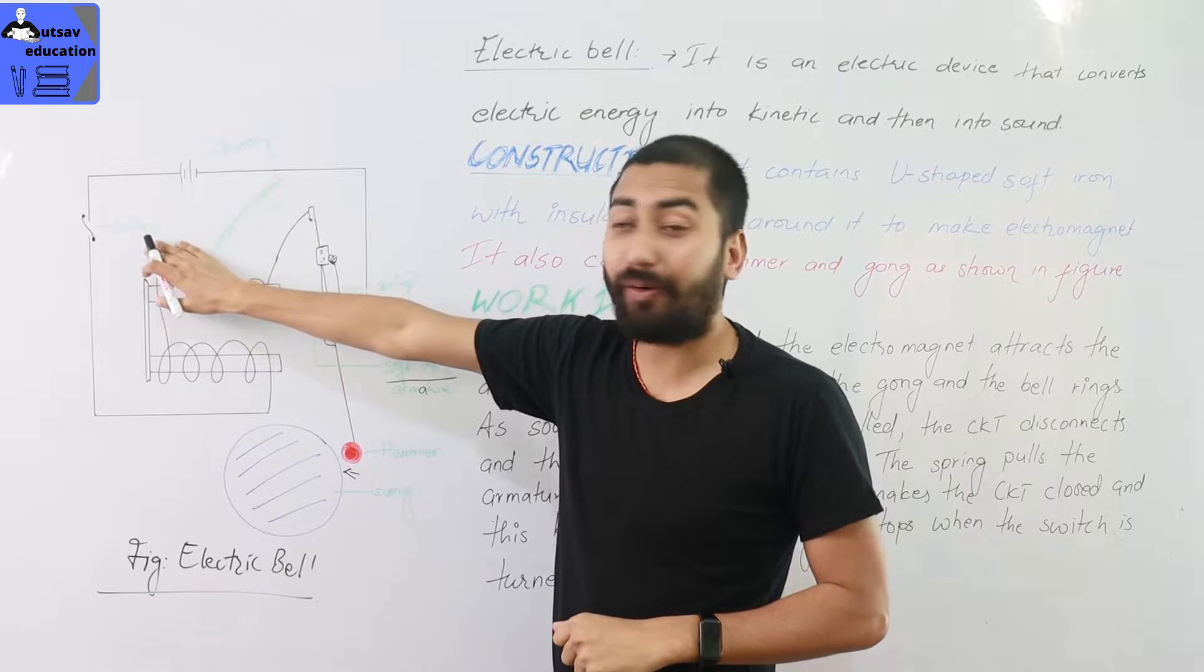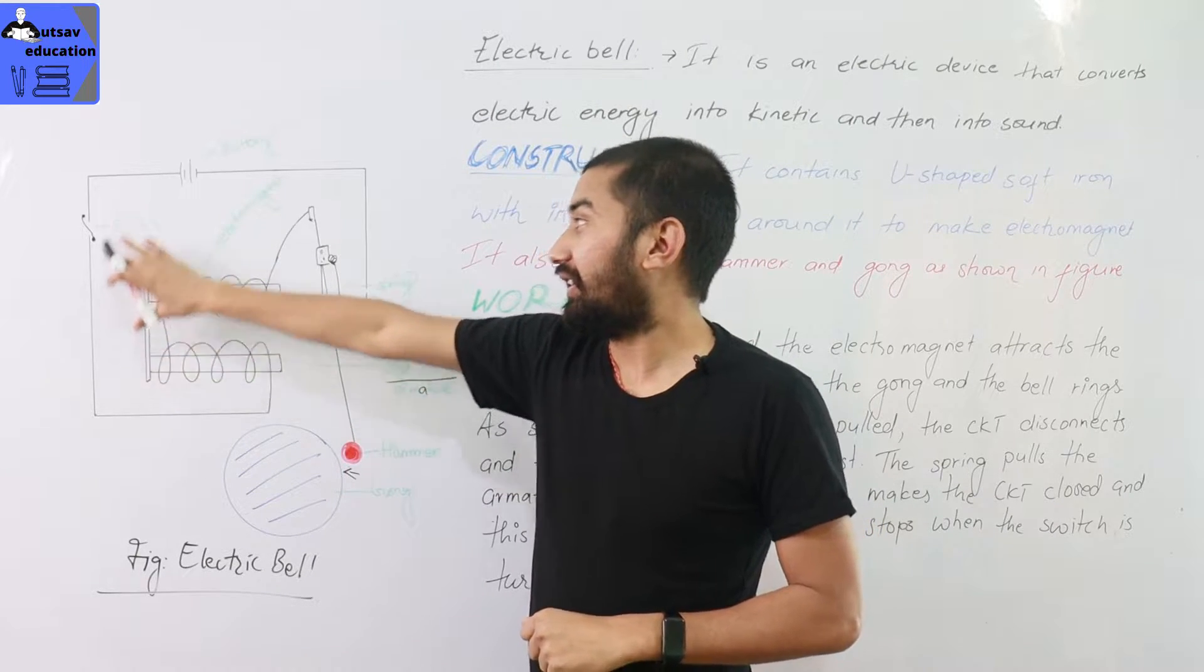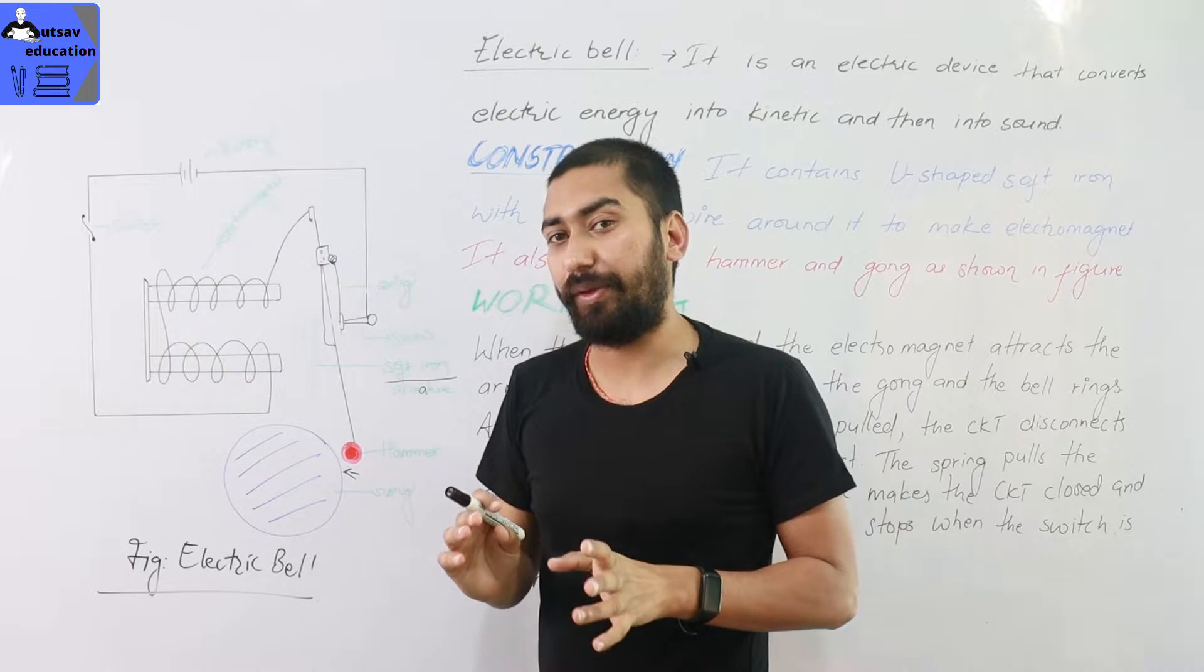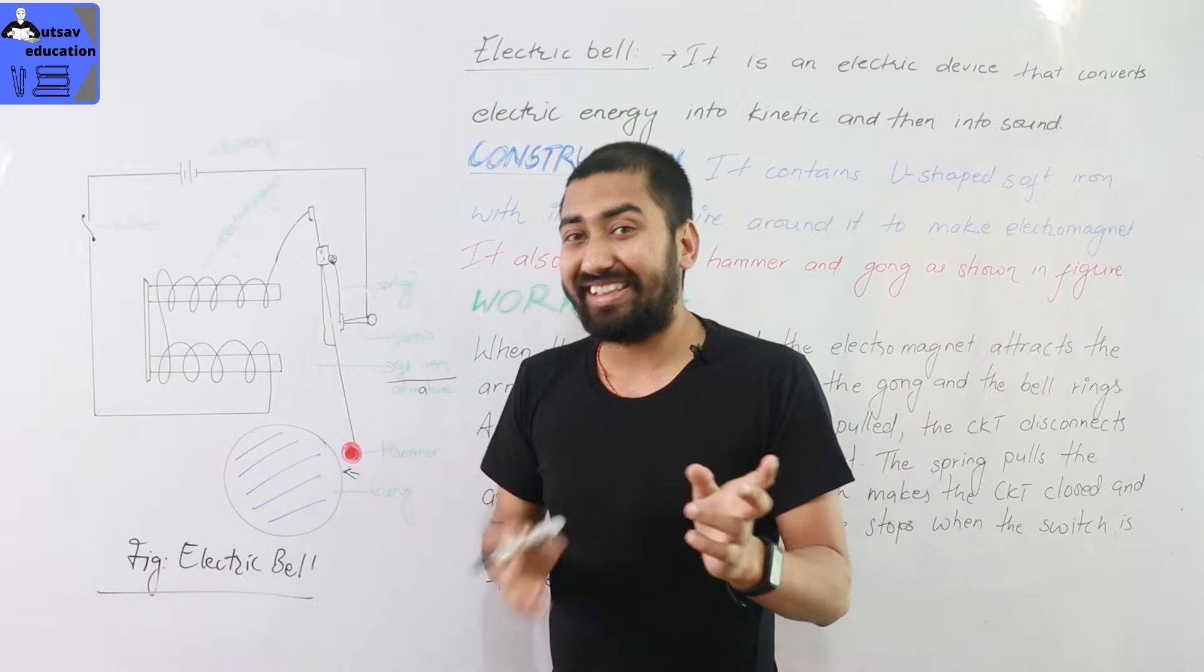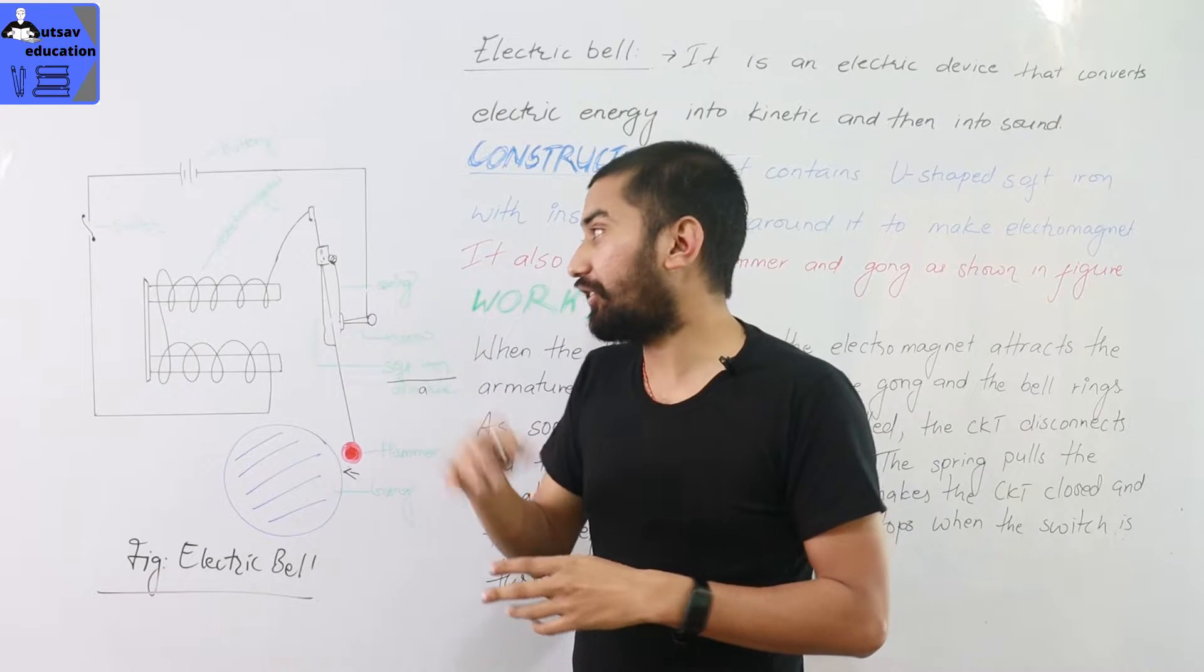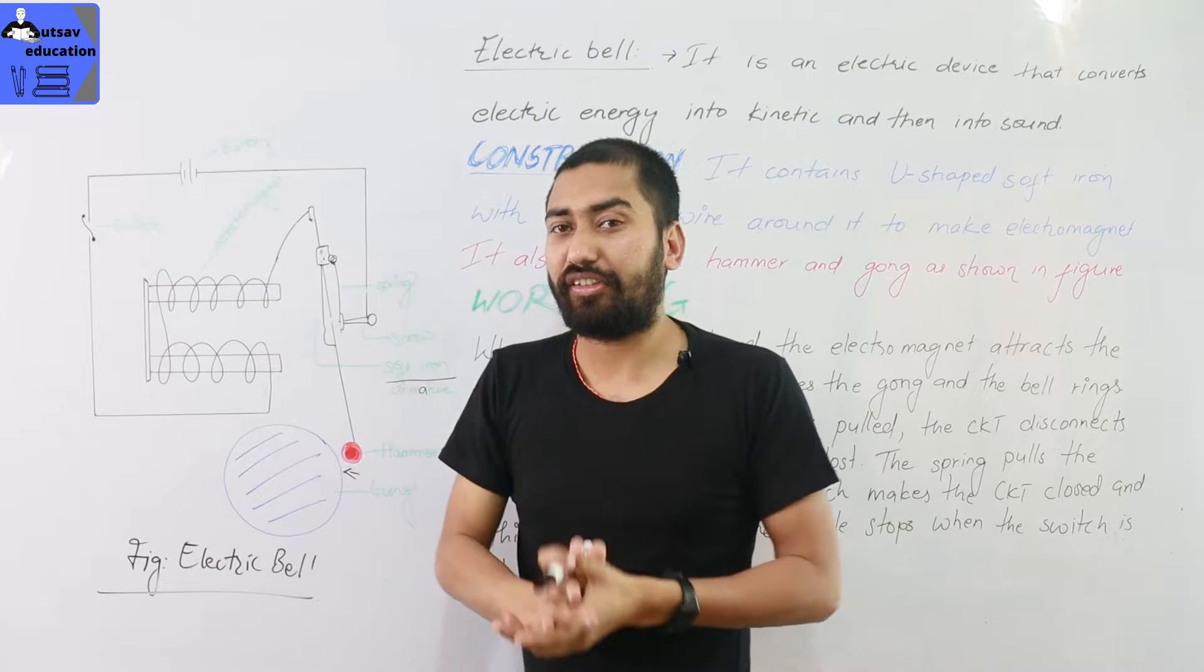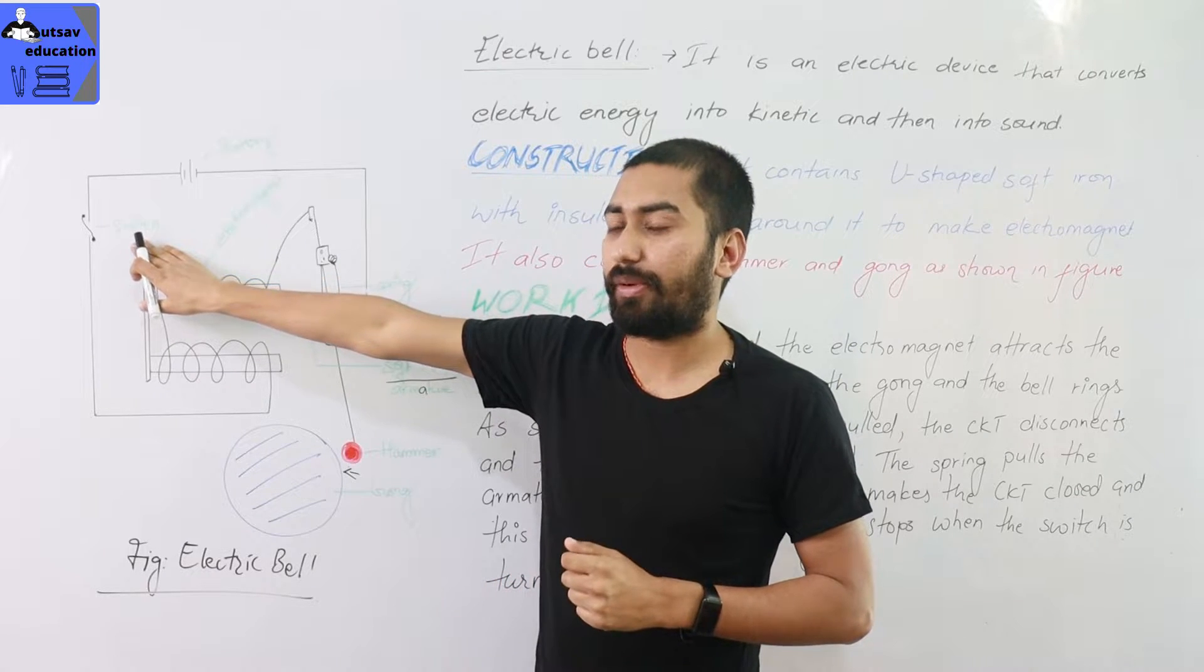When the power is switched on, the circuit becomes closed. Let's say it will be closed. Then the electric current will flow. We basically switch open. What happens? An electric current flows. At first, when the power is connected, an electric current flows.